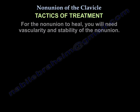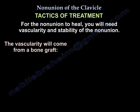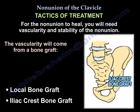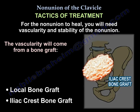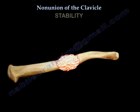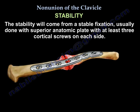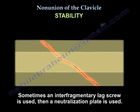Tactics of treatment: for the nonunion to heal, you need vascularity and stability at the nonunion site. Vascularity will come from a bone graft — either local bone graft that is saved, collected, and packed into the nonunion area, or an iliac crest bone graft. Stability will come from stable fixation, usually a superior anatomic plate with six cortices on each side. Sometimes an interfragmental lag screw compression is used, followed by a neutralization plate.